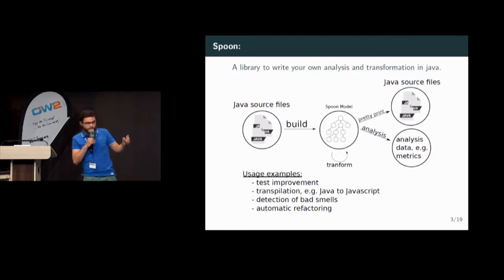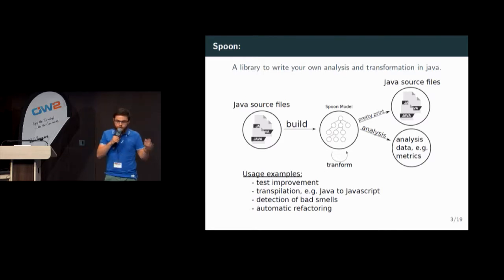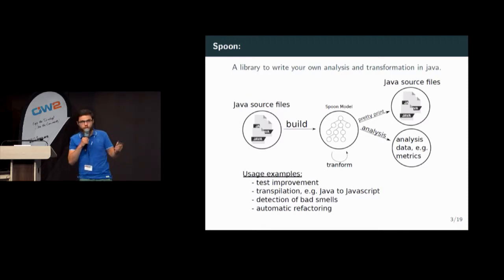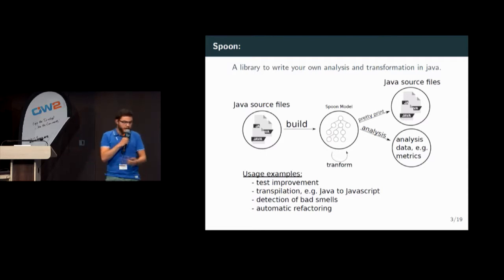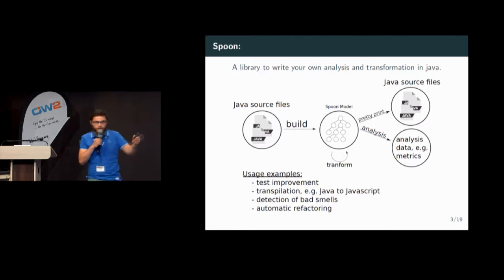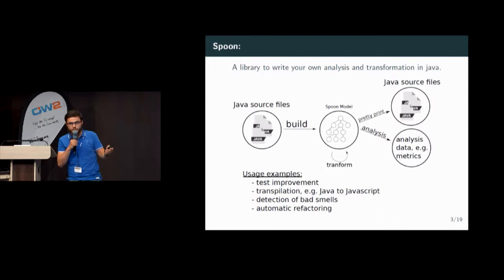About the output of Spoon, it depends on the usage you have. You can print the transformed Java source files, or print the analysis data such as the number of classes in your project. At the bottom of the slide are some usage examples. First, test improvement — you can generate new assertions for a test method. Transpilation — by customizing the pretty printer, you can do a transpilation from Java to JavaScript.